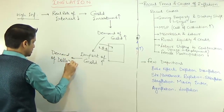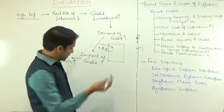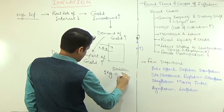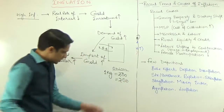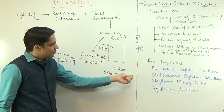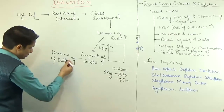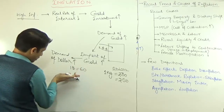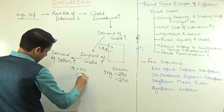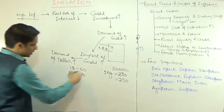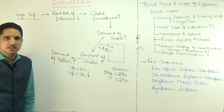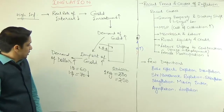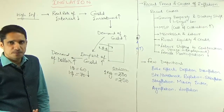When demand for a good increases, its price increases — just like when demand for onions increases, the price of one kilogram rises from 30 to 50 rupees, meaning the purchasing power of money has decreased. Similarly, when the demand for dollars increases, the value of the rupee falls. If earlier one dollar equaled 60 rupees, with higher dollar demand you now need to pay 70 rupees for the same dollar — in other words, domestic currency depreciates.